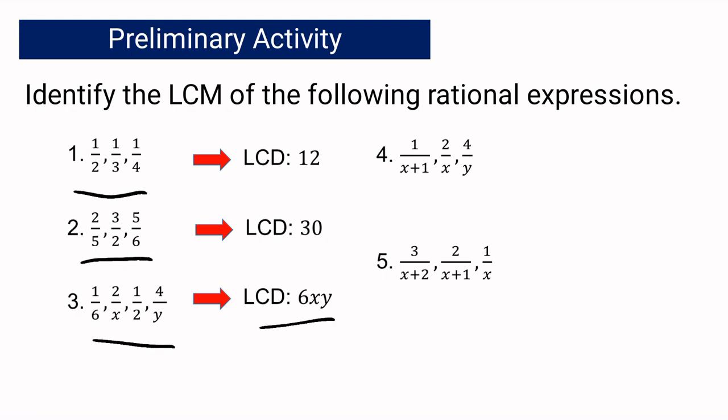For the fourth rational expression: 1 over X plus 1, 2 over X, and 4 over Y — our LCD is XY multiplied by (X plus 1). We can express our LCD as a product, so it becomes X squared Y plus XY. But since we will be dealing with rational expressions, it will be easier to express the LCD as factors.